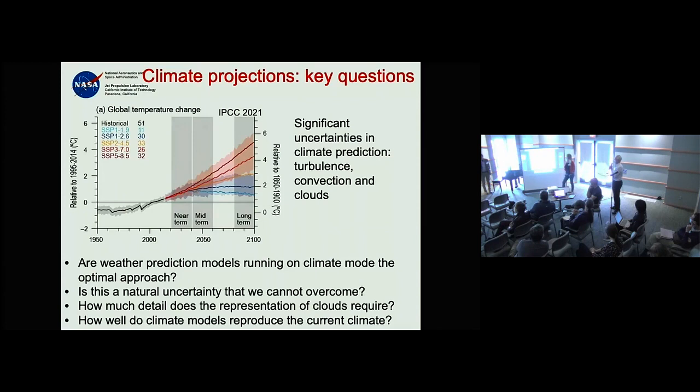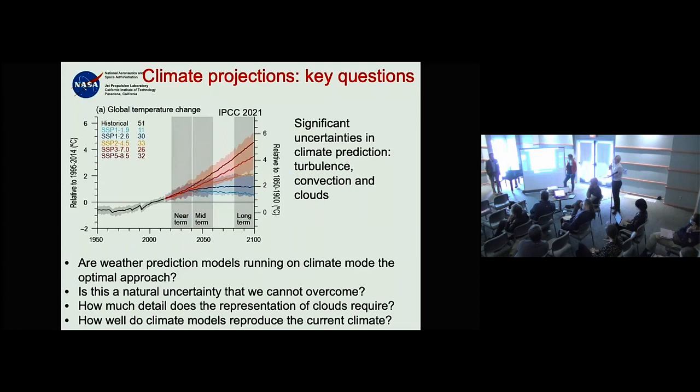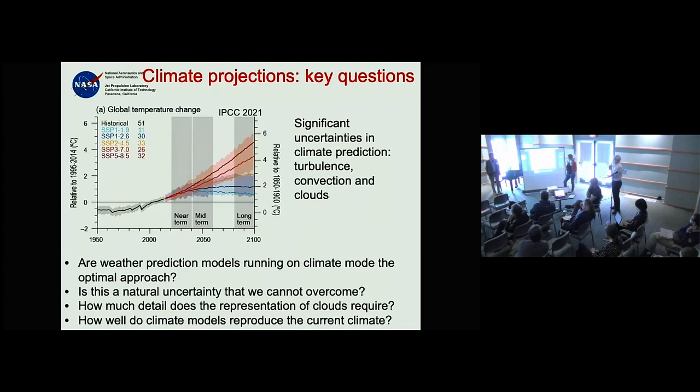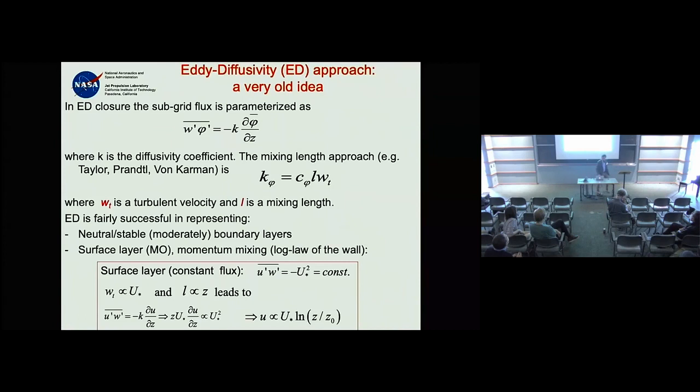Monin-Obukhov is there — it's in most weather and climate prediction models as your boundary condition. Monin-Obukhov is effectively eddy diffusivity. Most models right now have it as the surface-layer description, and your boundary condition is associated with that surface layer.